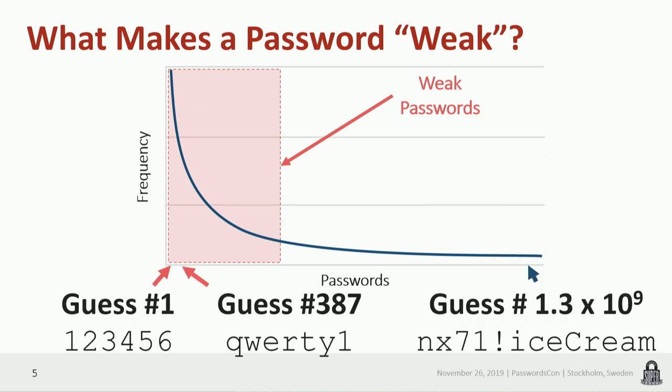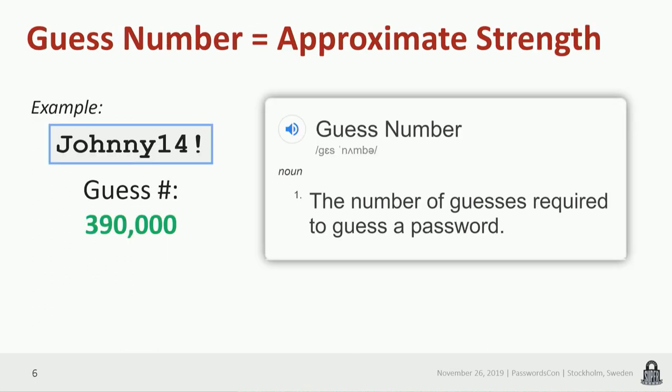Here's an example. Imagine the password 123456 — it's one of the most common passwords, and it's often the first guess that attackers make when they try to crack passwords. In academia we use exactly this information — how many guesses have been made — to reason about the strength of a password. We simply call this number the guess number. At a high level, it's the number of guesses required to guess a password, and it's usually a good indicator of how strong a password is.